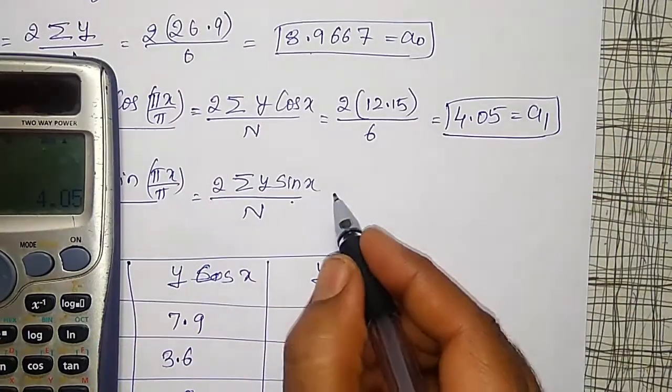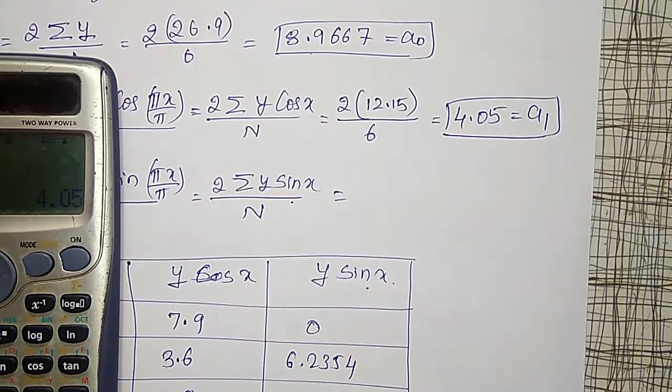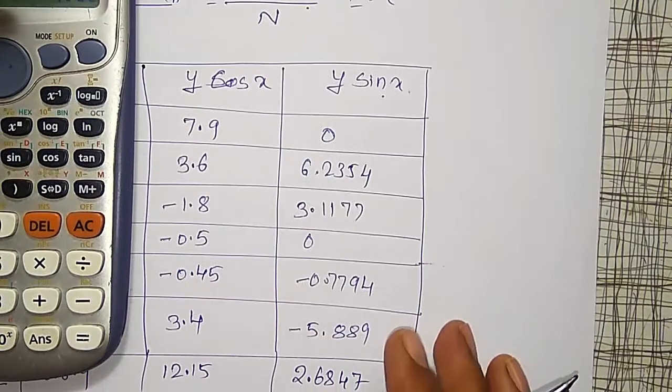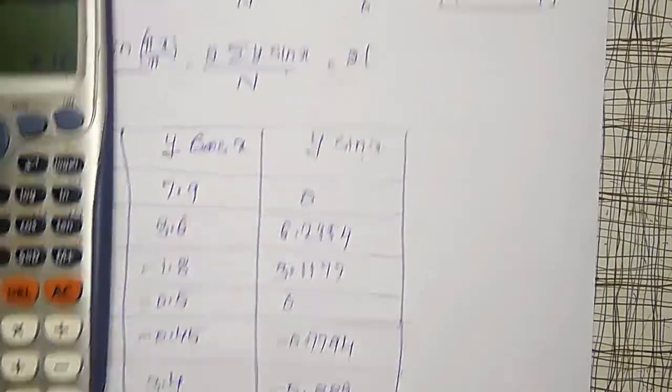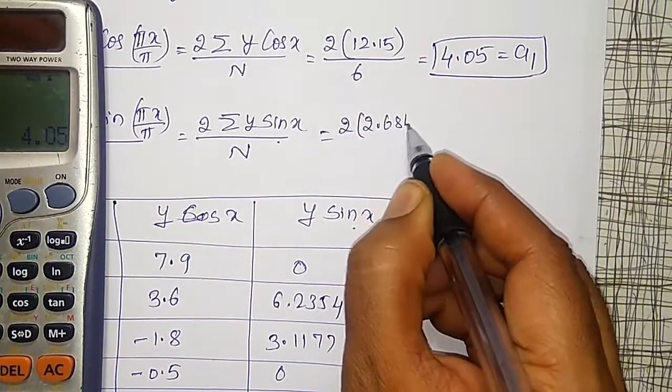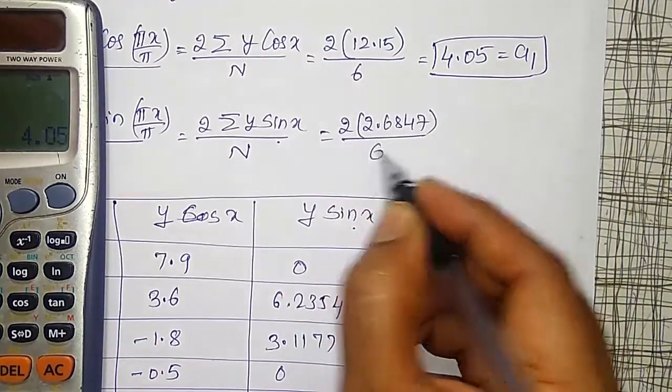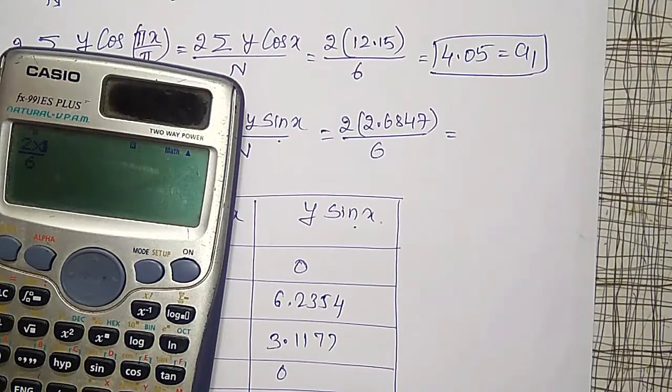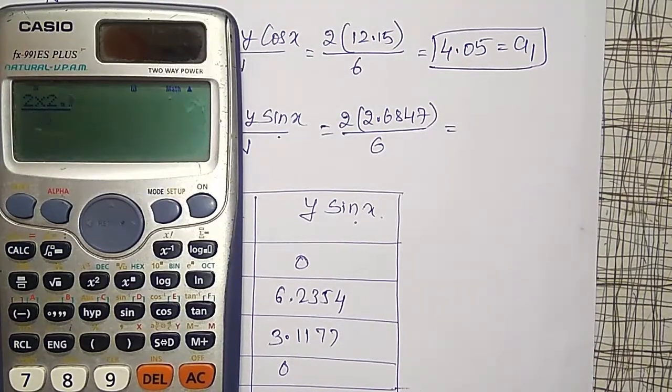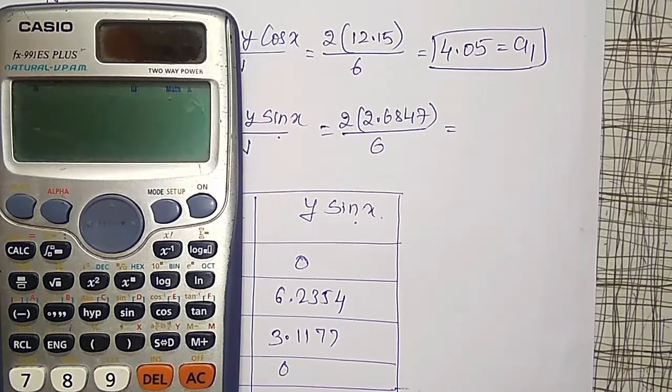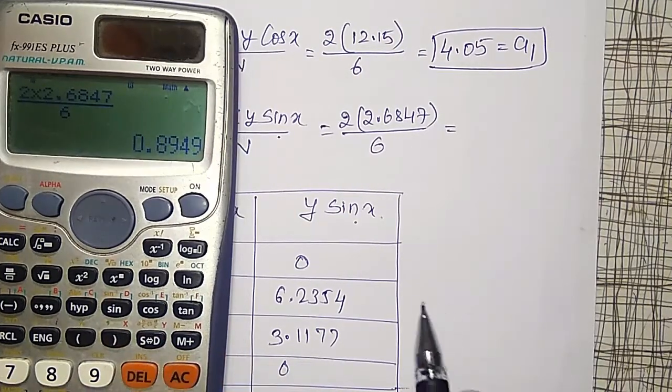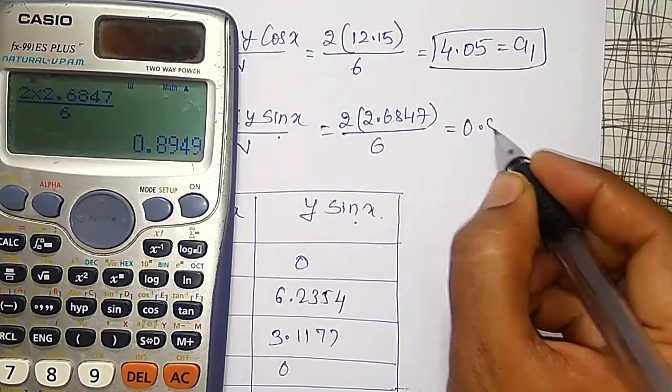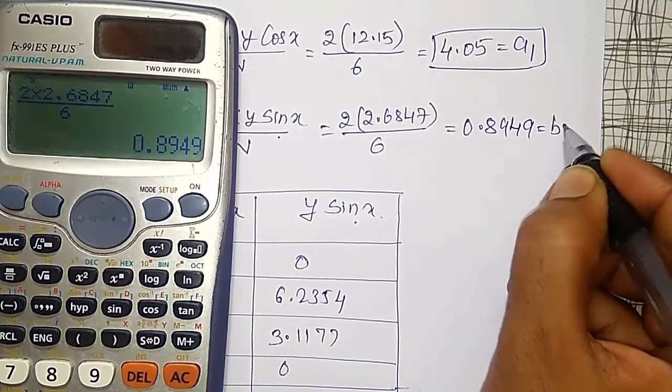Like that, to calculate b1, 2 into summation of y sin x is nothing but 2.6847, 2.6847 divided by 6. In the same operation, I will substitute and simplify, 2 times 2.6847, and it comes out to be 0.8949. 0.8949 is my b1.